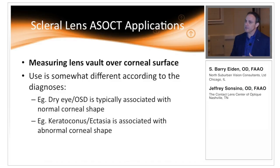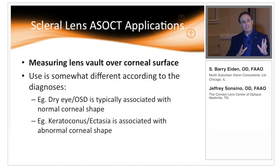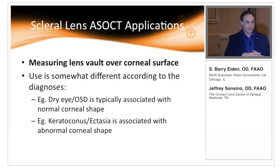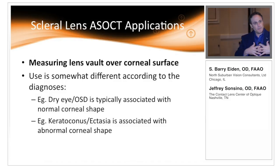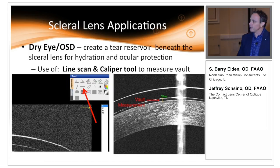In our ocular surface cases we're typically dealing with normal, regular corneas in terms of topographic shape, so you won't have the tremendous irregularities seen in keratoconus or post-LASIK ectasia. The more irregular the cornea, the more careful you have to be — things might look good in one area and really bad in another. Combining corneal topography and tomography with anterior segment OCT goes a long way in those irregular corneas.